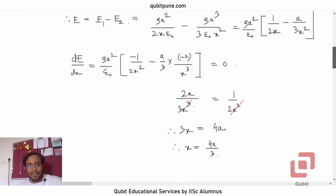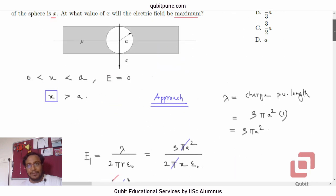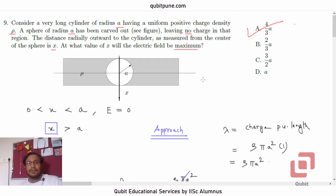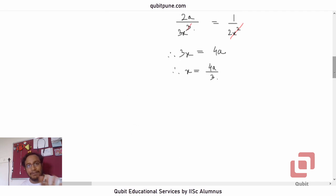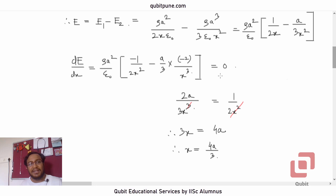Observe that they want us to determine the maximum value of electric field. On taking the derivative of E with respect to x, we have got only one value of x, so we are guaranteeing that this will be the maximum. At this location, the electric field will be maximum. From then, the field will decrease as we go away from it.